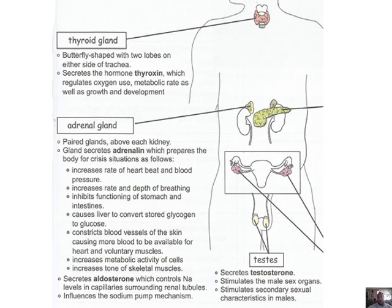Or if you overproduce thyroid-stimulating hormone, it really stimulates the thyroid to produce thyroxin — what does that mean for your metabolic rate, oxygen use, and growth and development? Bear in mind that some people are born without a thyroid — what do you think would happen if you had none of that?